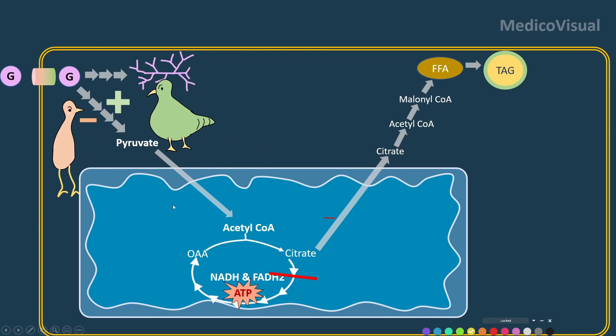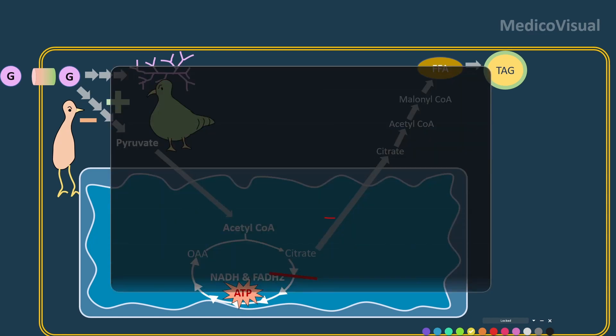These hormones which are working against insulin, since they are working against insulin, are called counter-regulatory hormones. They are counter-regulatory — working against the insulin.